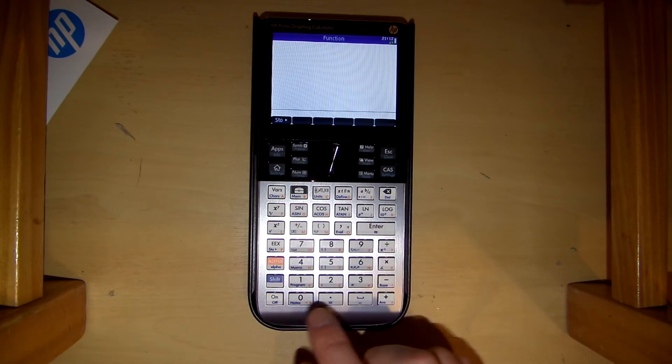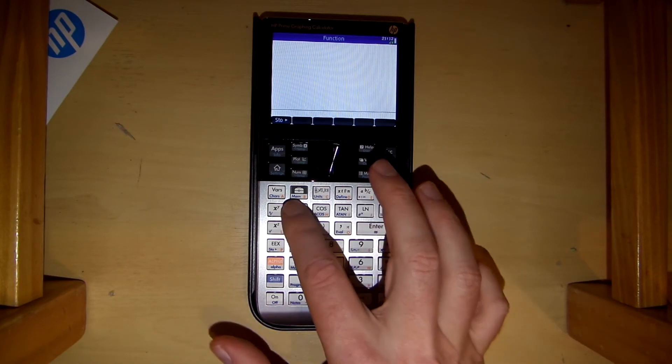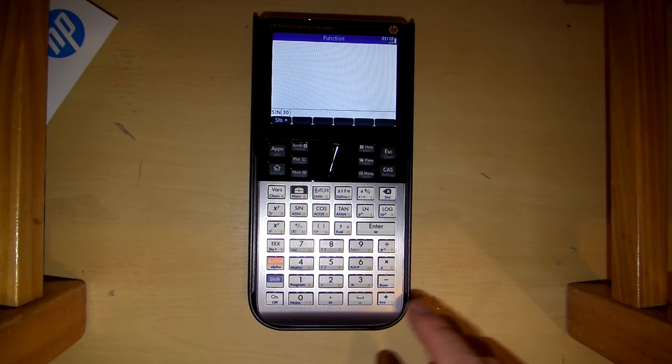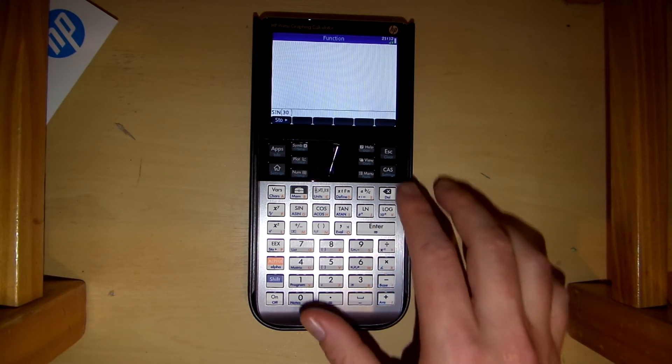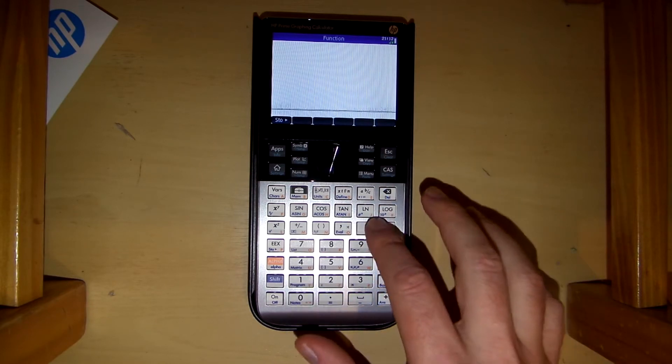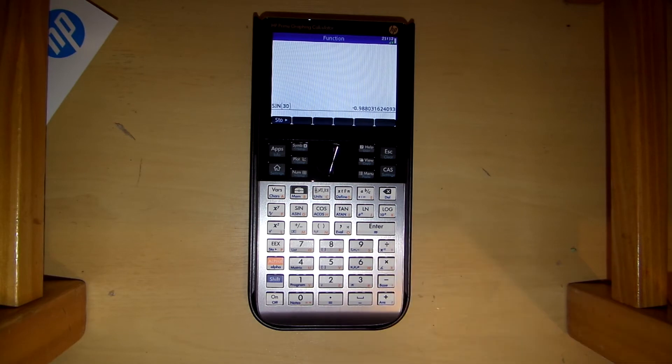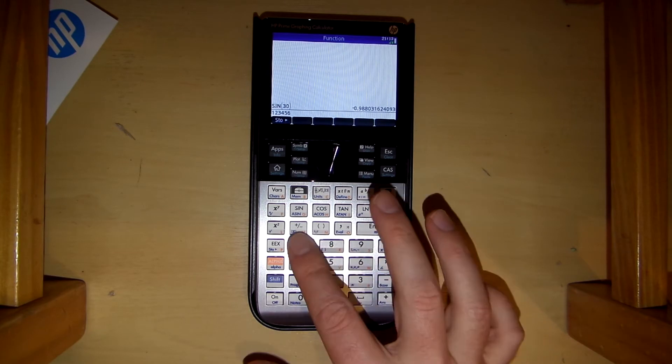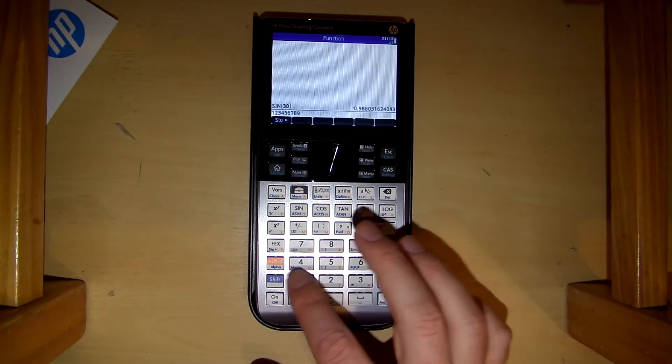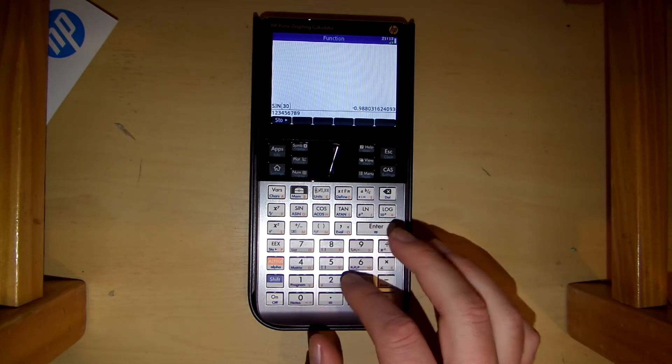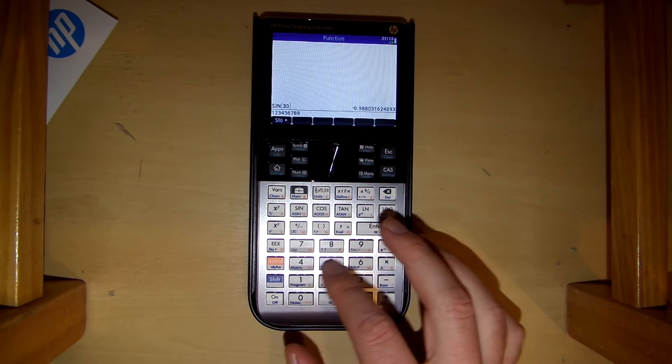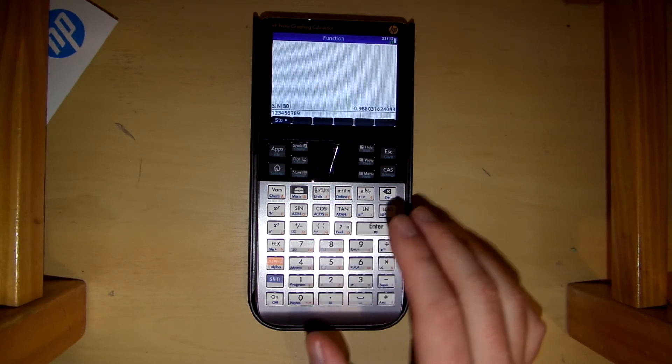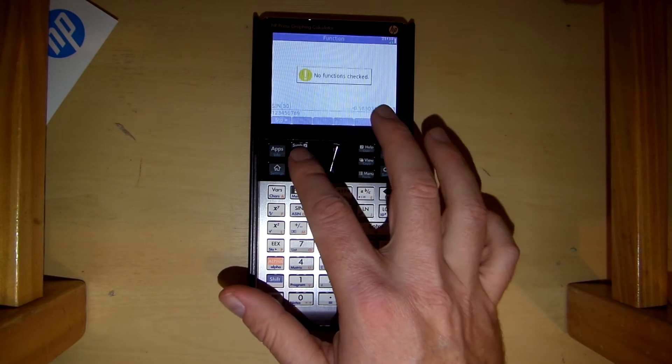So let's have a look. Sine of 30. It'll be in radians. So we just go enter. What else? Let's have a look at the very nice tactile feel. This is what I was looking for. I've seen, as I said, I've used the emulator. But this is very, very nice. We can let's go to plot. Oh we can't do that.